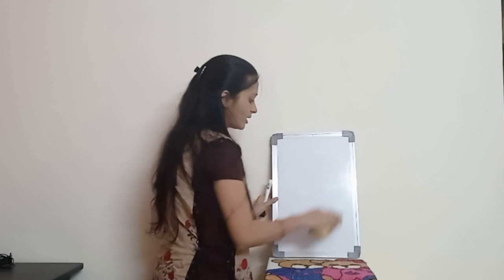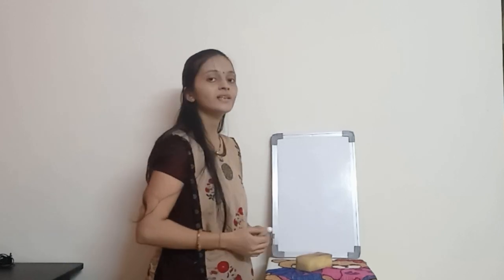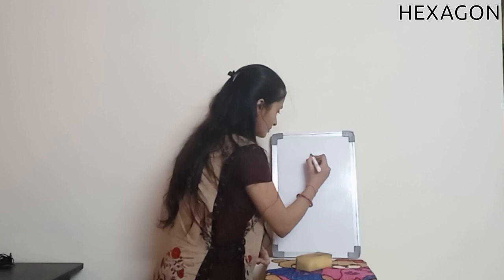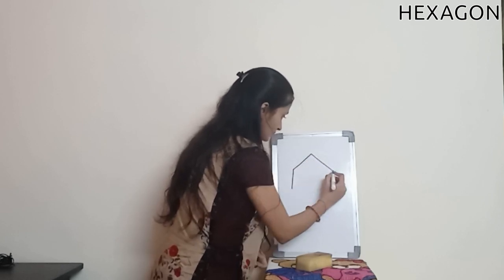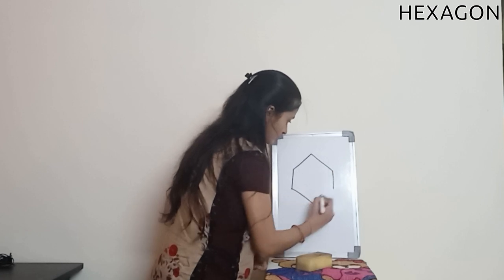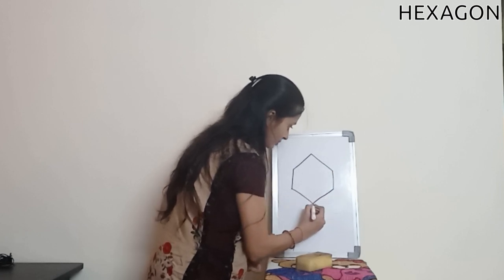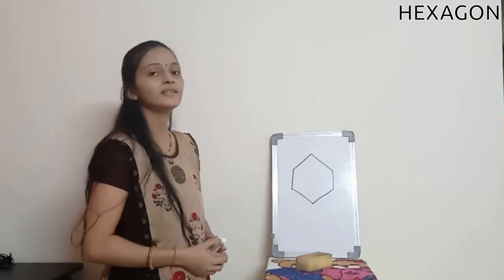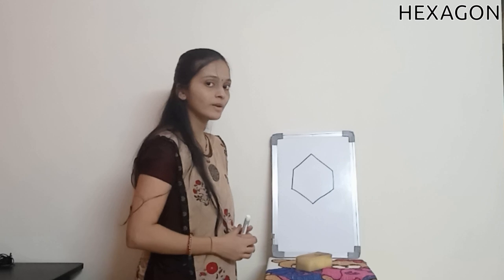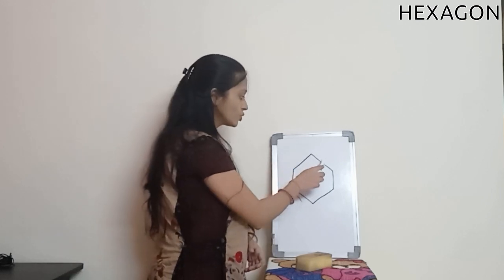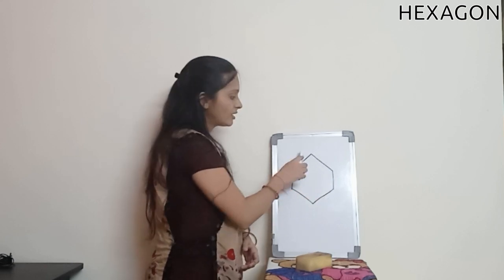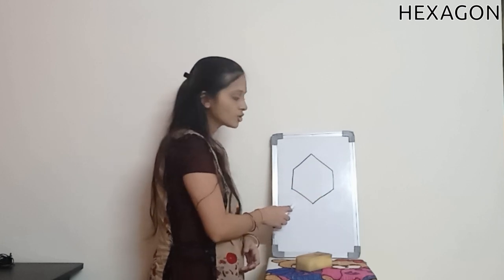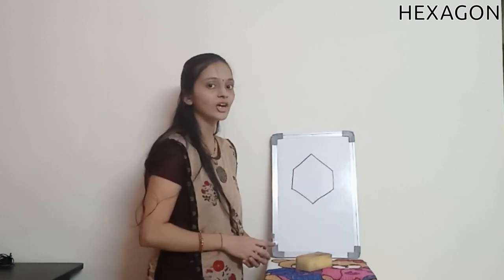Now our next shape is a hexagon. Let me draw. Yes, this is a hexagon shape. This shape has six sides. Let us count: one, two, three, four, five and six. A hexagon has six sides. This is a hexagon shape.